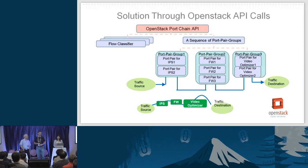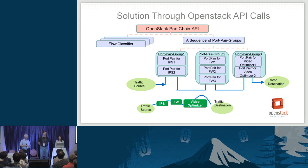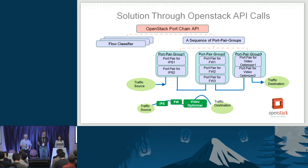To solve these problems, the networking SFC project was initiated in OpenStack Neutron. With this project, through a few API calls, the service chain can be automatically set up and its parts automatically provisioned. We'll cover the architecture and technical details in another session at 5:30; here I'm just going to give a very high-level introduction.